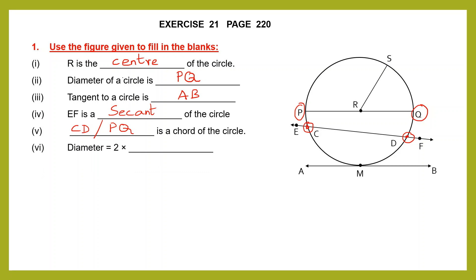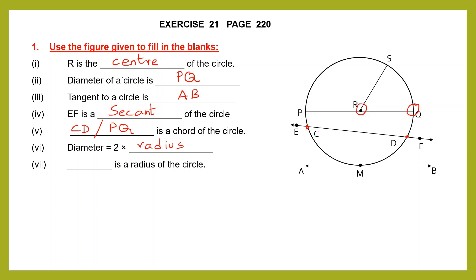Next: diameter equals 2 into radius. Radius is from the center to any point on the circumference, and the diameter is twice that radius. Now, blank is the radius of the circle. We have RS, RQ, and RP all going from center R to the circumference — those are all radii. So let's write RS as the radius of the circle.